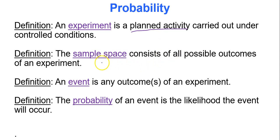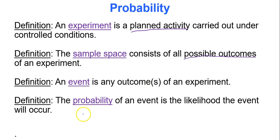The sample space consists of all possible outcomes of an experiment. So when you flip a coin, the coin could land on heads or tails — those are the possible outcomes. An event is any outcome of an experiment. So the probability is the likelihood an event will occur, such as: what is the probability the coin will land on heads, or tails, or that it will rain today? Those are all probability calculations.